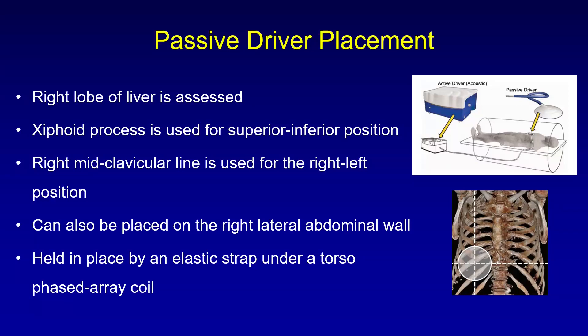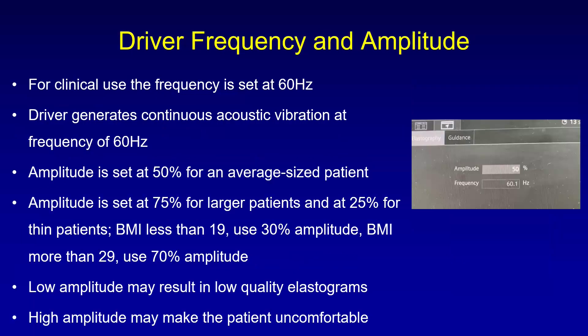Where do we place the passive driver? We place it on the right lobe of the liver, using anatomical landmarks. The xiphoid process is used for superior-inferior positioning, and the mid-clavicular line is used for right-left positioning. In patients who have undergone surgery or hepatectomy, we can also place it on the right lateral abdominal wall. The passive driver is held in place by an elastic strap under the torso phased array coil, and you need to set the frequency and amplitude of the driver.